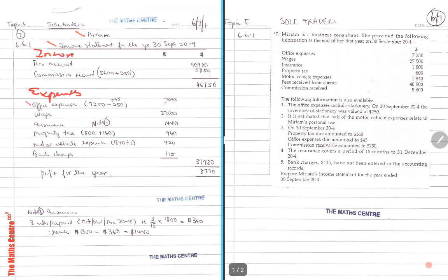Office expenses will come here: $7,250. Wages: $27,500. Insurance is $1,800 here but remember there was a note that three months is prepaid, so we need to less out $360 to get $1,440. We have property tax: $800 here. Motor vehicle expenses: $1,840. The adjustments, this part in brackets, are my working so that you can write neatly the figure in the first column here.